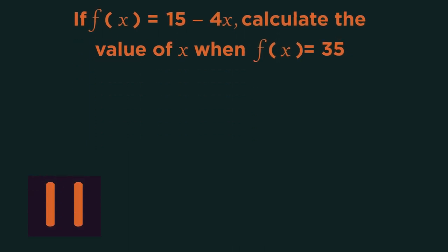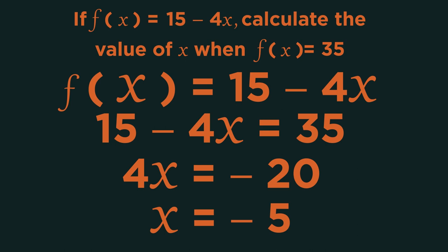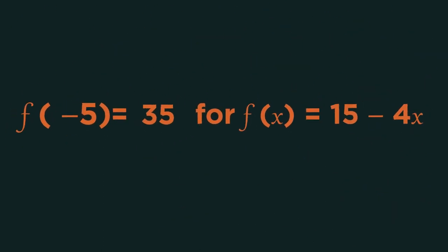Pause the video, solve for x and click play when you're ready. Did you get x = -5? So an input of negative 5 will give an output of 35.